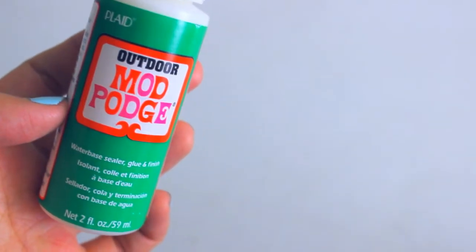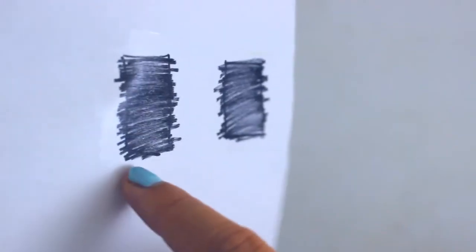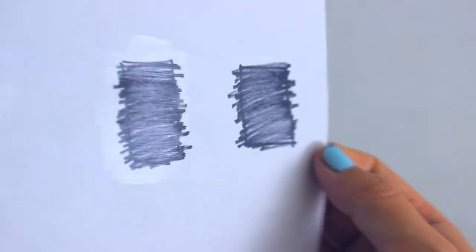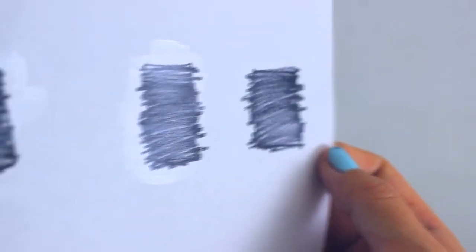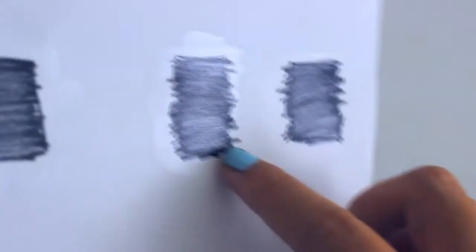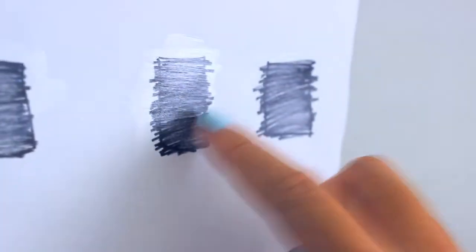The fourth one we have is the outdoor version. The outdoor version is kind of like a mix between the glossy version and the matte version. It's not as shiny as the glossy version but it does have glossiness to it. So this is the outdoor version.